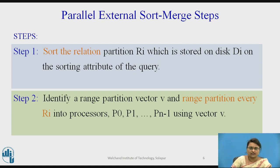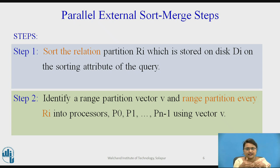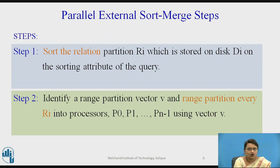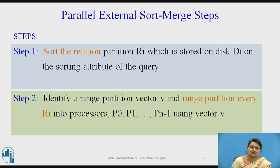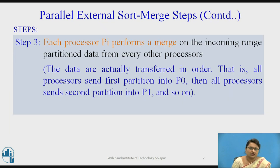The second step is to identify a range partitioning vector v. Whatever the earlier disk contents are, we apply sorting and then partition again. For example, if we are partitioning by salary, we construct a vector based on salary ranges corresponding to processors p0 through p(n-1), and we take the partition vector based on that.